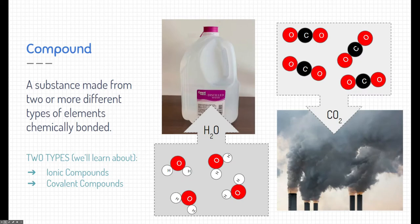Contrasting that is compounds. This is what we're learning new for this unit. A compound is a substance made from two or more different types of elements that are chemically bonded. Now that's really important. These elements have to be chemically bonded. They can't be separated.